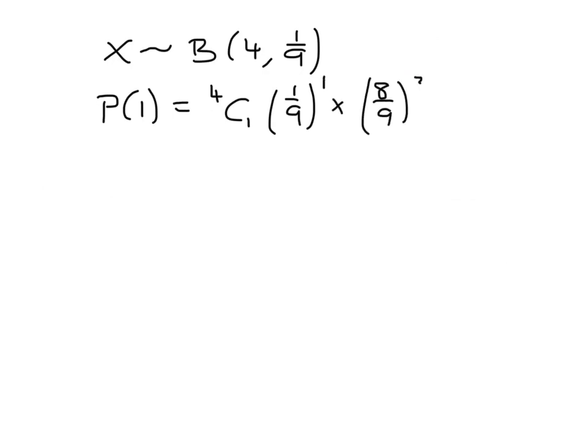Final part, part 3, is a binomial. We're going to have 4 trials and the probability of getting a head and a 6 is 1 ninth. And we want to work out for this binomial distribution the probability that it happens once. So that will be 4C1, 1 ninth to the power 1 multiplied by 8 ninths to the power 3.